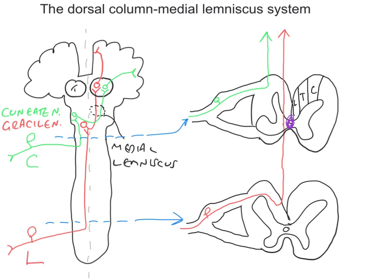This somatotopic organisation has real clinical significance — particularly for central cord lesions which grow from the centre outwards. They might take out the lumbar region first, then the thoracic region, and only at a later stage affect the cervical region. I hope this brief summary has proved useful. We'll do another one on the spinothalamic pathways.